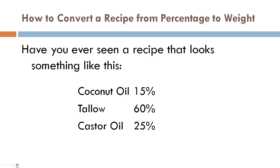Have you ever seen a recipe that looks something like this? Coconut oil 15%, tallow 60%, castor 25%? And you wonder: how do I know how many ounces of each oil I need? How much lye, how much water do I need? This is where percentages come in handy.